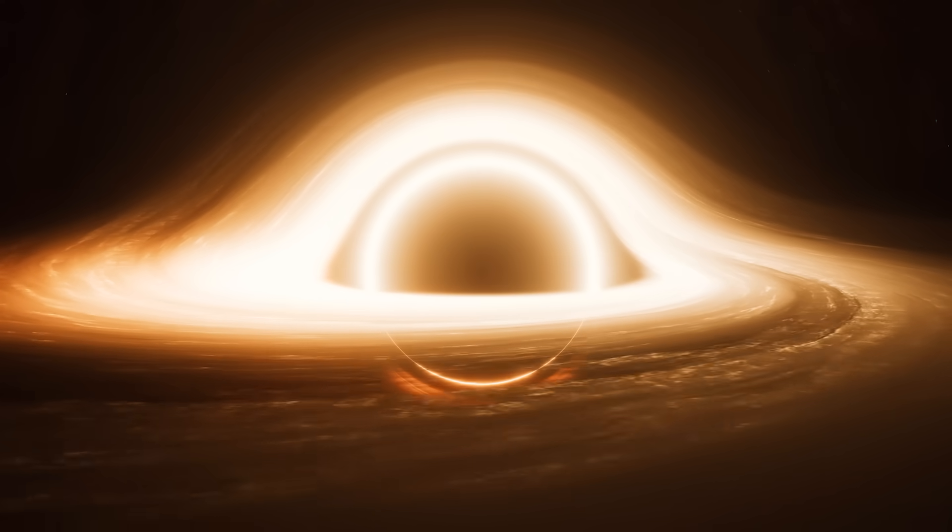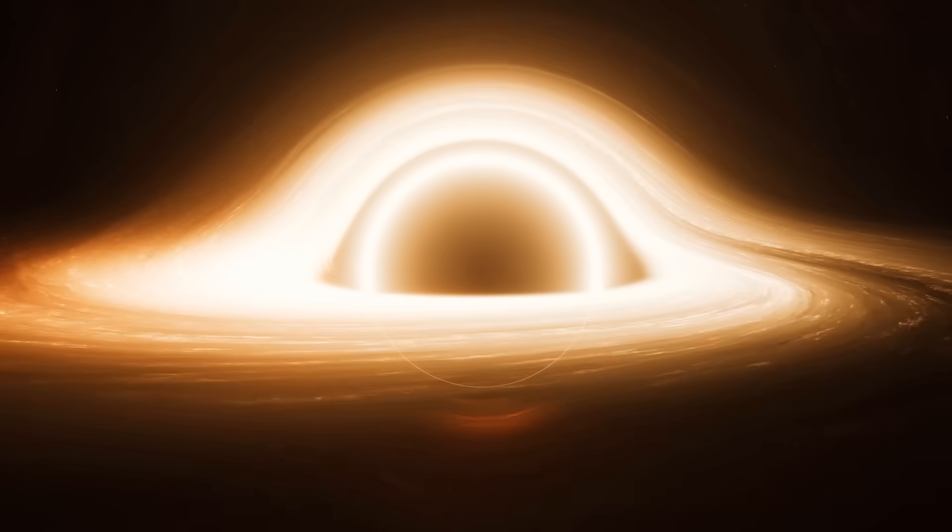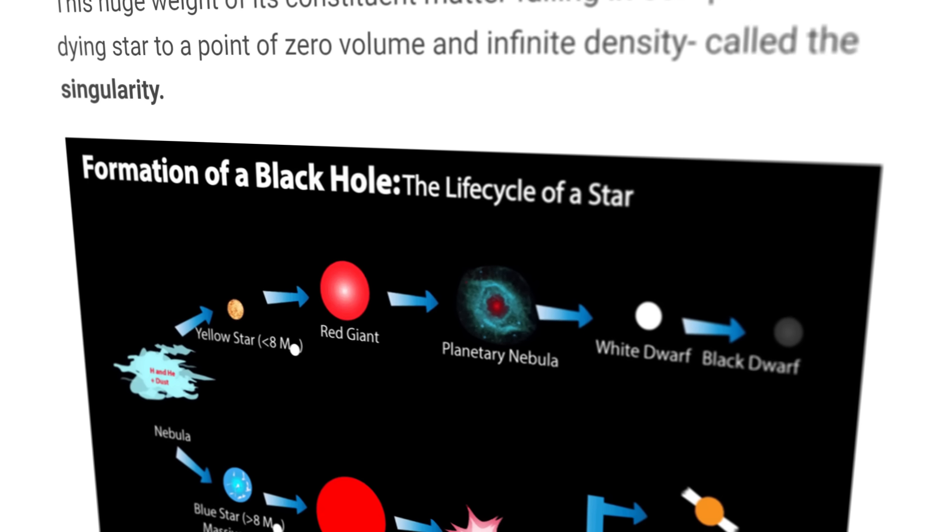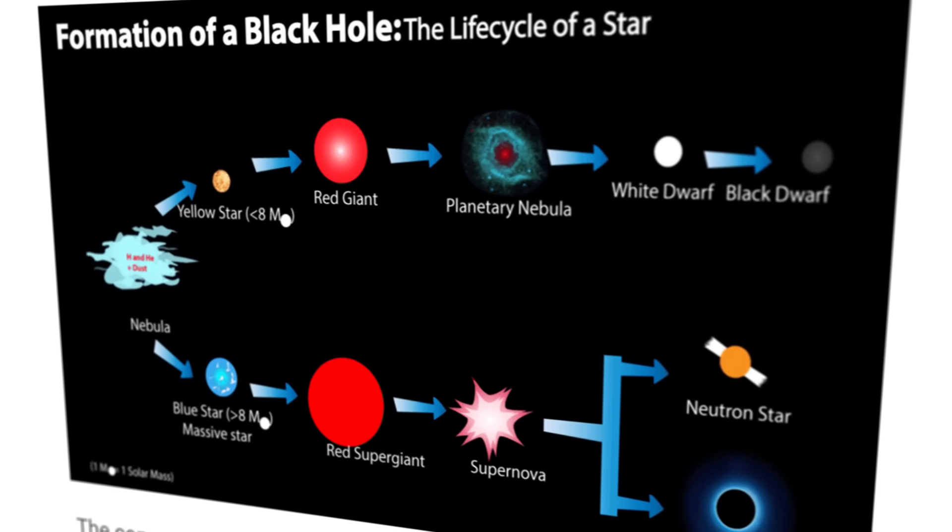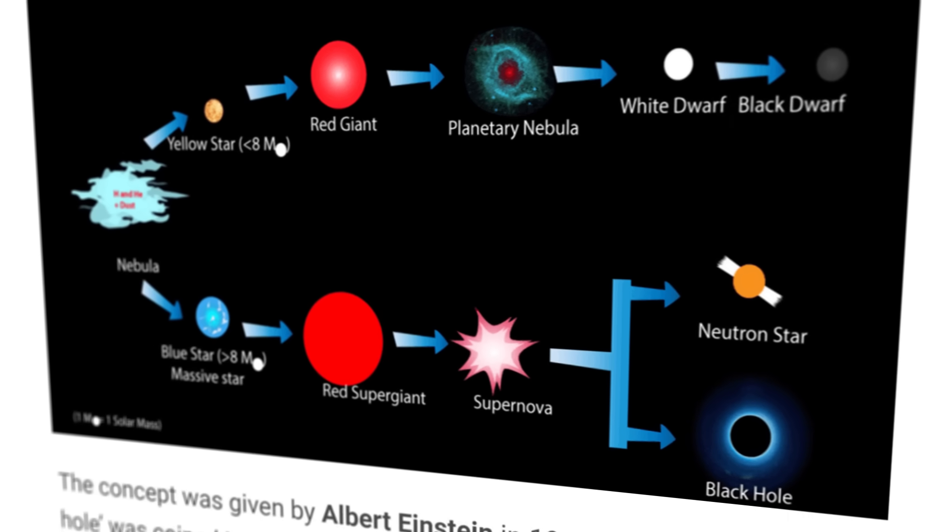If you thought the idea of black holes was a confusing, mind-bashing theory, well, welcome to the world of white holes, where everything happens in reverse and cosmology becomes even more bewildering. A black hole is formed when a massive star exhausts its nuclear fuel and collapses under the force of its own gravity. This collapse creates a region in space with such intense gravitational pull that nothing, not even light, can escape from it.